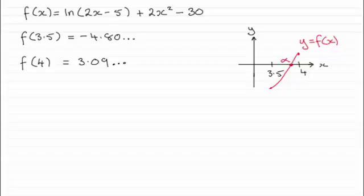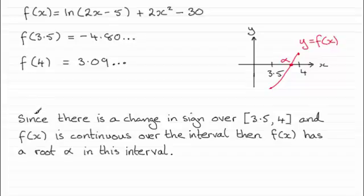So you would sum this up by saying something along the lines that since there is a change in sign over the interval 3.5 to 4 and f(x) is continuous over the interval, then f(x) has a root alpha in this interval.